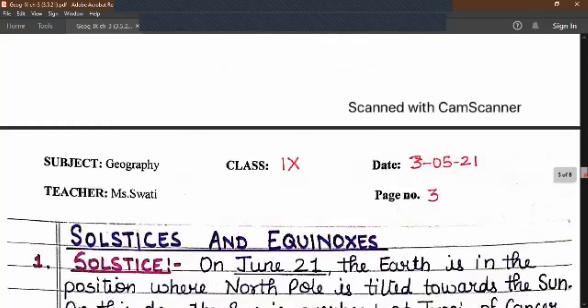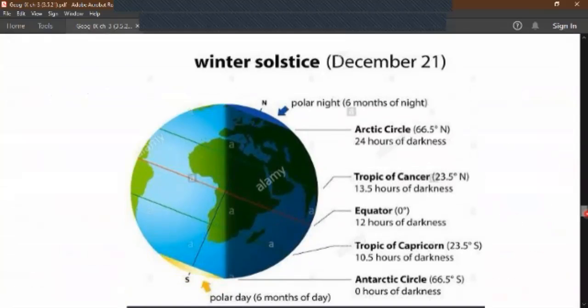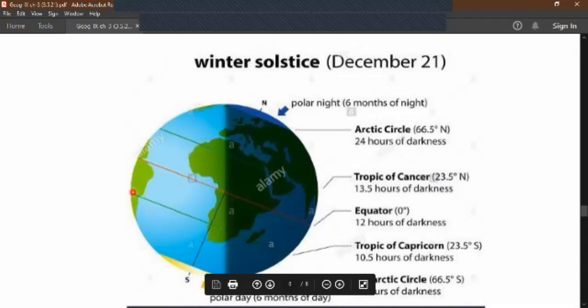Now similarly during the month of December, on the 22nd of December the southern hemisphere is tilted towards the sun while northern hemisphere is tilted away. This day is known as winter solstice and the sun's rays are vertical at the Tropic of Capricorn. So it is having summers in the southern hemisphere and it is winters in northern hemisphere. Hence we call it as winter solstice.